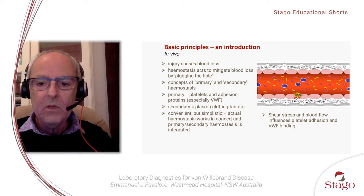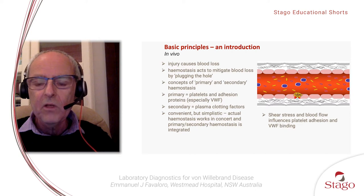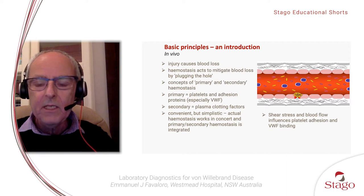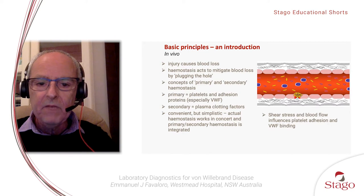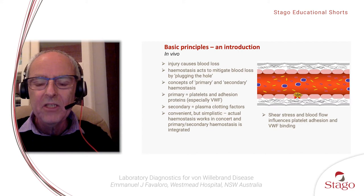In this slide, I'm showing a figure — a cartoon of blood flow and an injury to a blood vessel, shown as stars — and platelets, where the platelets adhere to the site of injury via adhesion proteins, including von Willebrand factor, which is attaching not only to platelets but to the subendothelial matrix, in particular collagen. In vivo, we have shear stress and blood flow, which induces platelet adhesion and also von Willebrand factor binding.